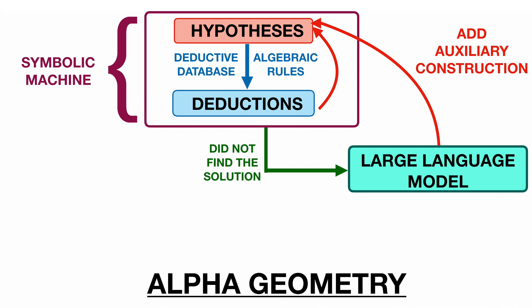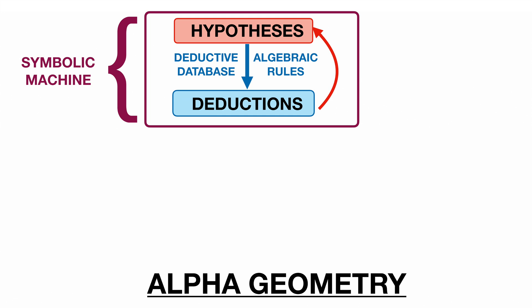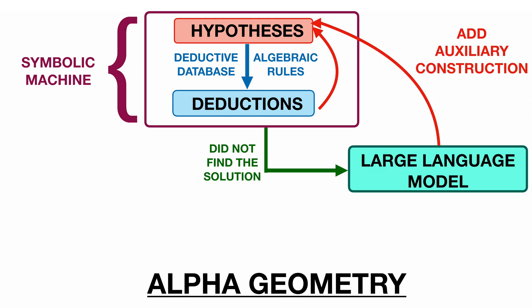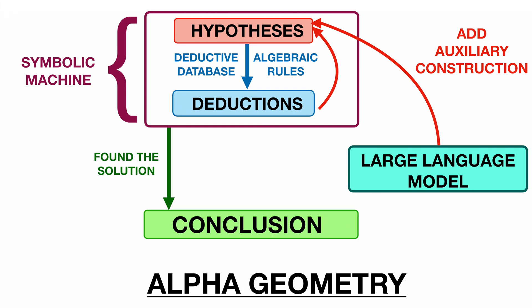In other words, it will draw an additional point, line or circle which becomes a new hypothesis in our set of hypotheses. Then it will use the symbolic machine on the new larger set of hypotheses and make deductions. If it still didn't reach the desired conclusion, it will use the large language model again to generate an auxiliary construction and so on until the problem is solved.